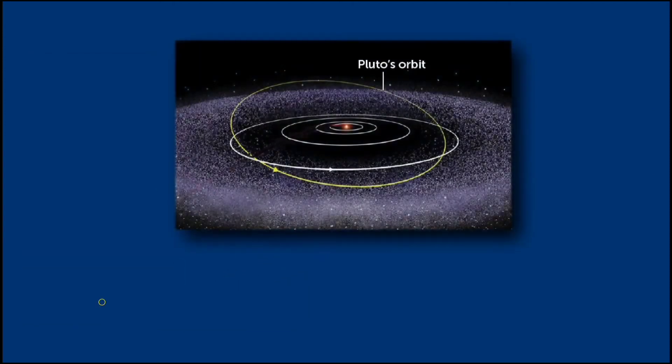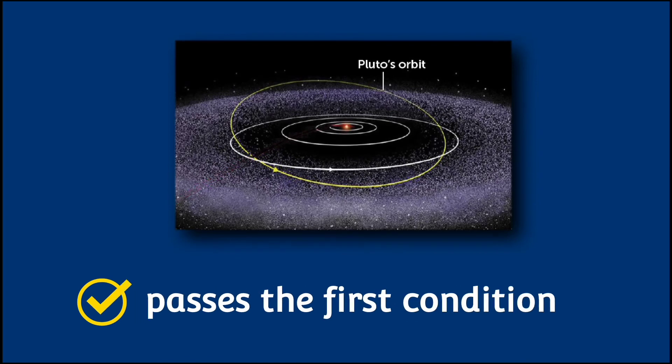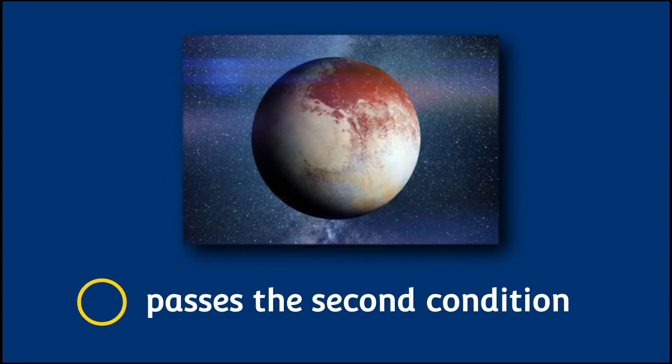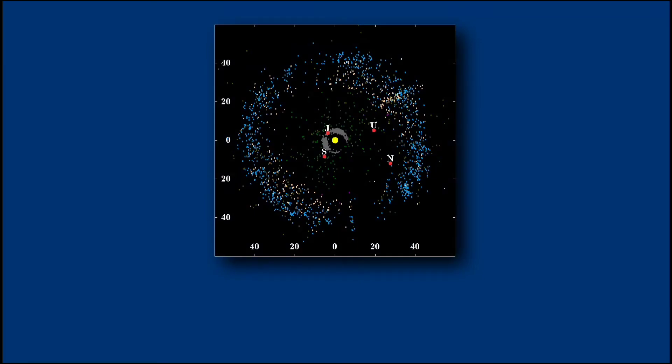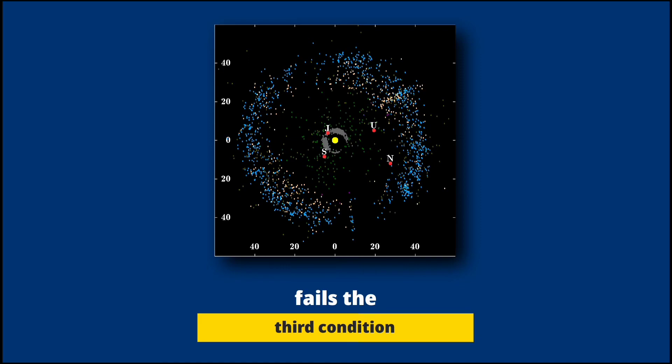Pluto revolves around the sun, so it passes the first condition. It is round in shape, so it passes the second. But it's located in a population of many objects such as asteroids and debris called the Kuiper Belt. So it fails the third condition, making it not a planet.